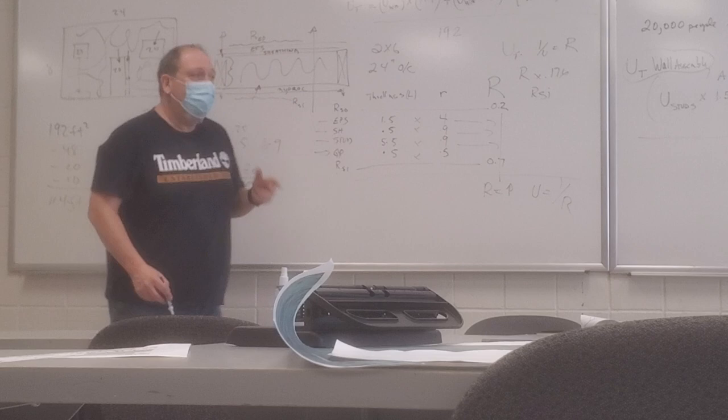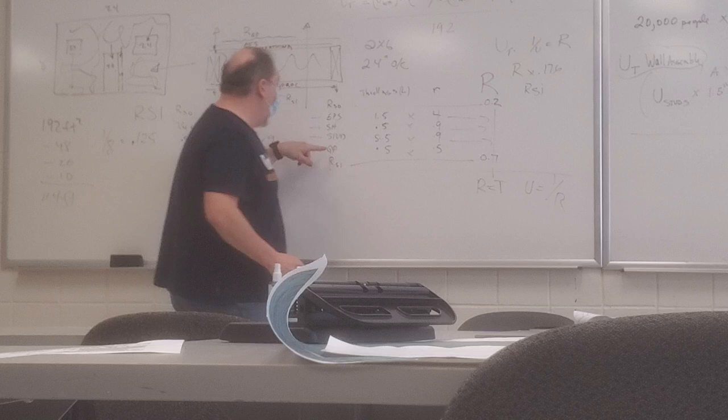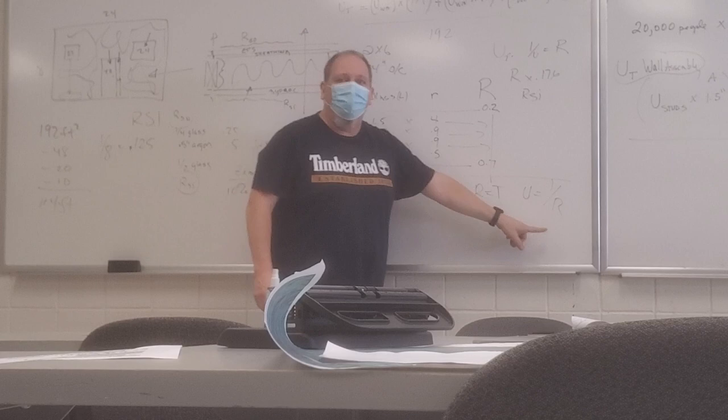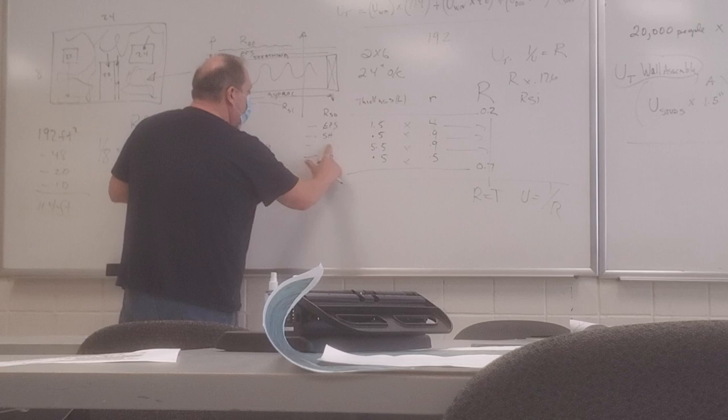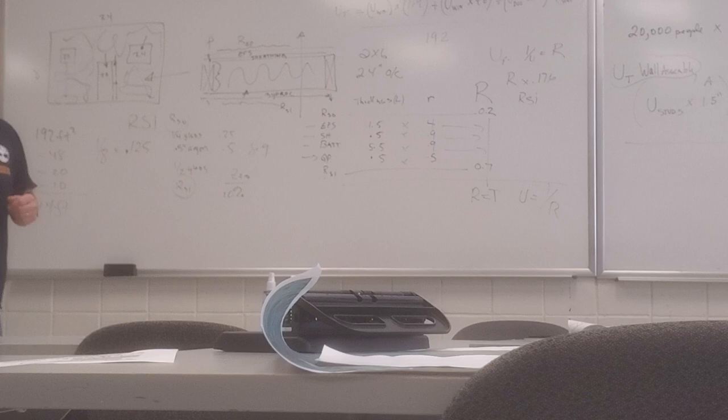That will give you the R-value going through that part of the stud. You convert it to a U-value, which is 1 over R. Right? Then you repeat the exact same process. Just with insulation instead of stud. Now you put in bat, or whatever I tell you that's there. You multiply it out. Now the bat returns to 3.5.